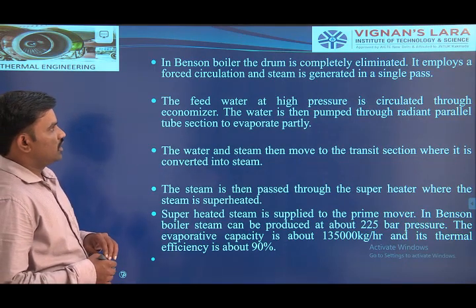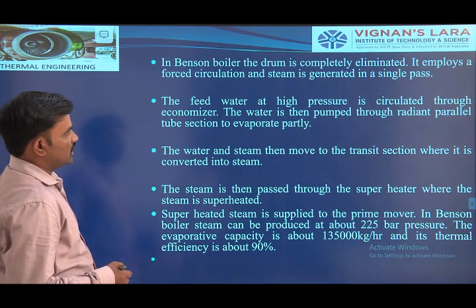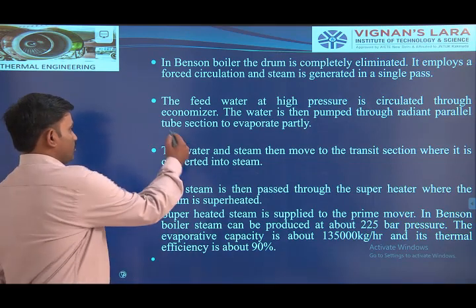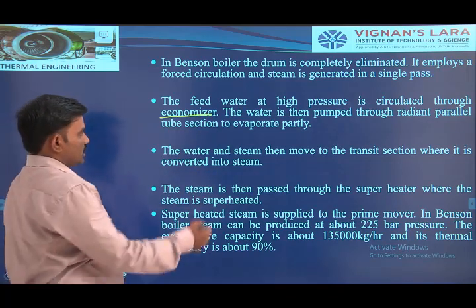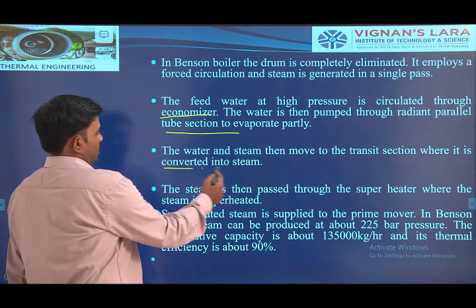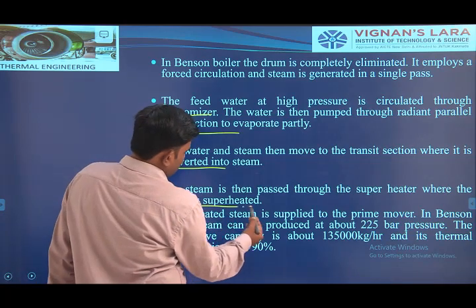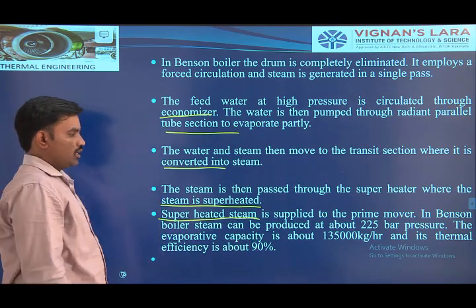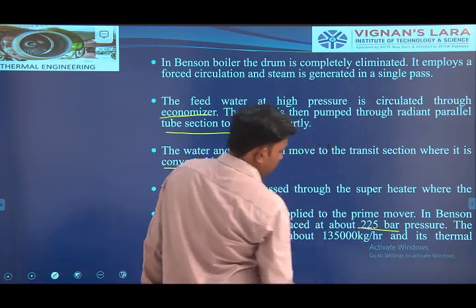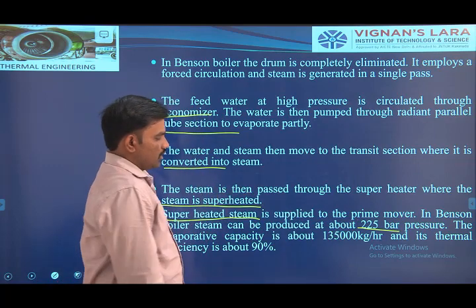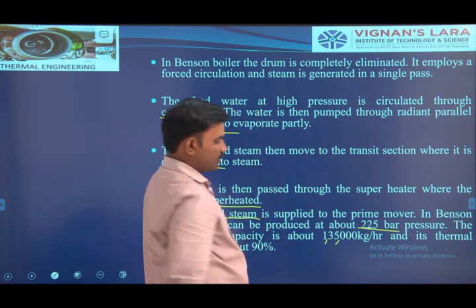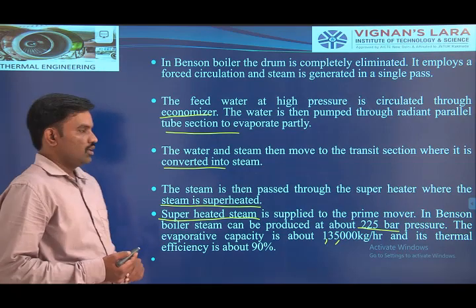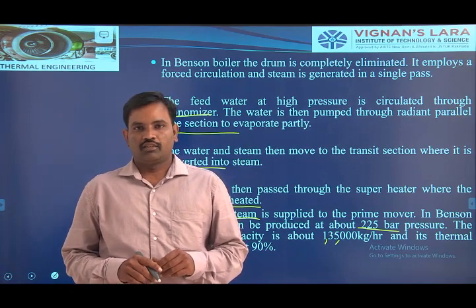The Benson boiler has no drum — it is completely eliminated. It implies forced circulation, and steam is generated in a single pass. Feed water at high pressure is circulated through the economizer; hot water is sent to the radiant evaporator tubes and converted into steam. The generated steam is heated in the superheater section and converted into superheated steam. That superheated steam is introduced into the prime mover, and from the prime mover we are producing work output. The generated steam pressure is 225 bar, and this type of boiler is used to generate 35,000 kilograms of steam per hour. These are the different types of boilers we are using in steam power plants. Thank you.